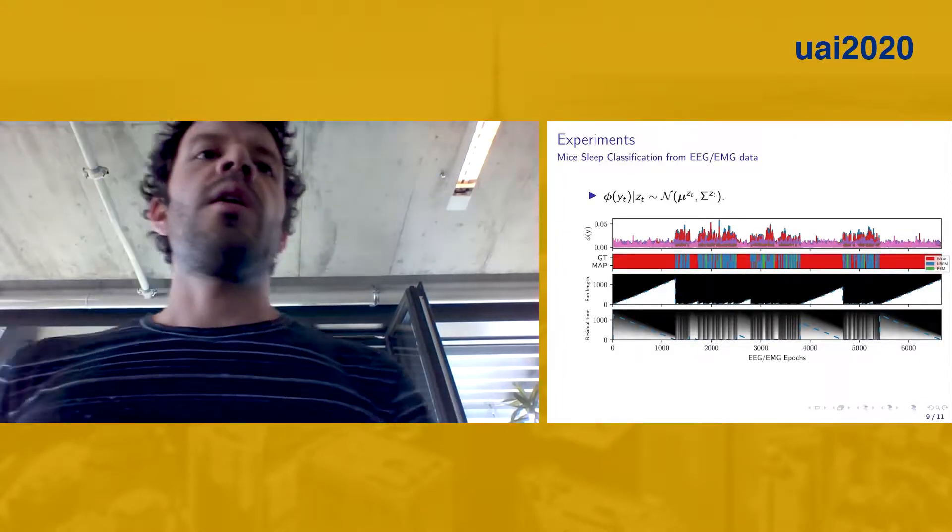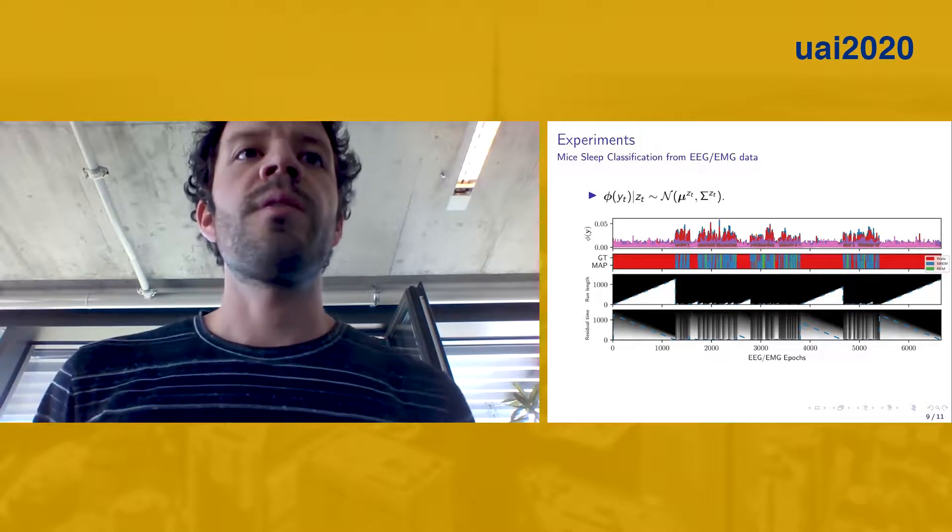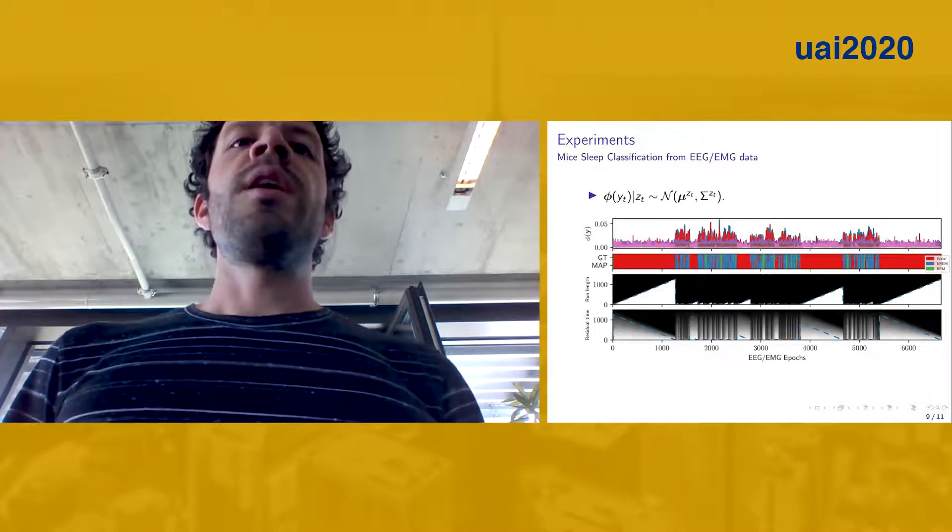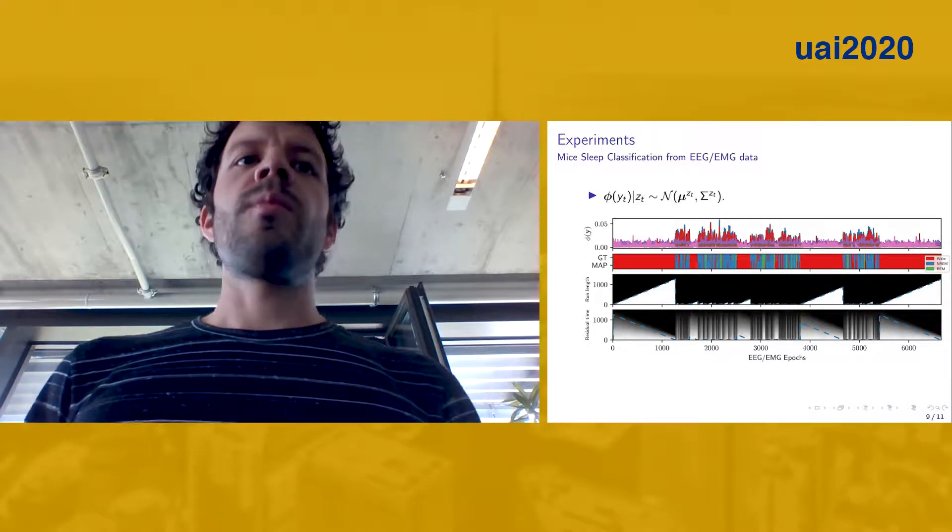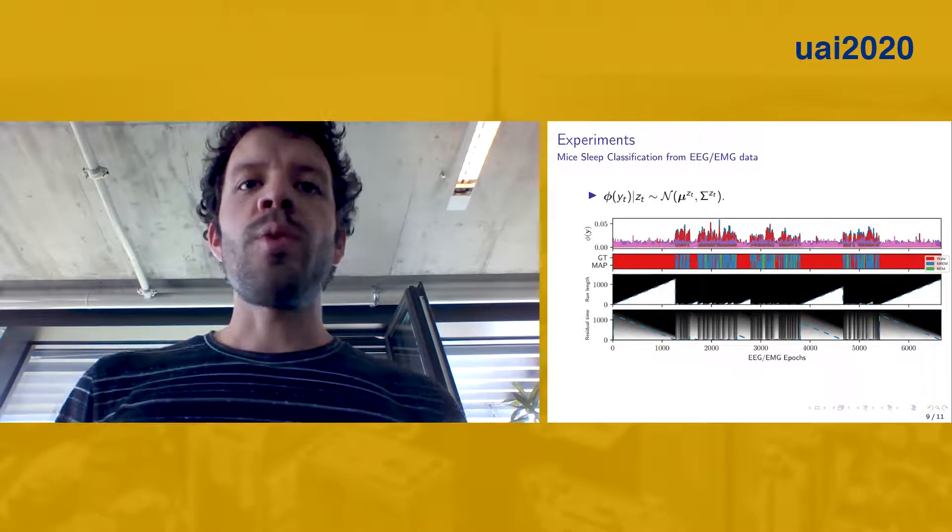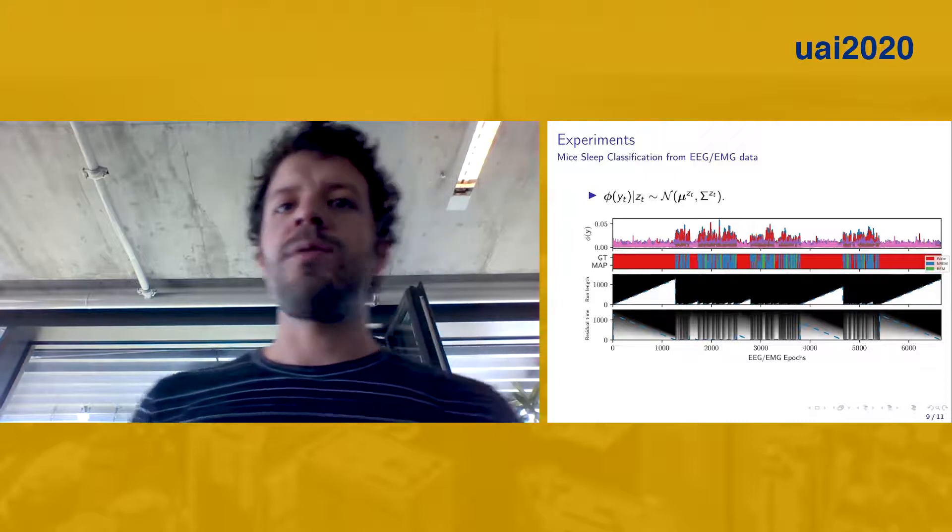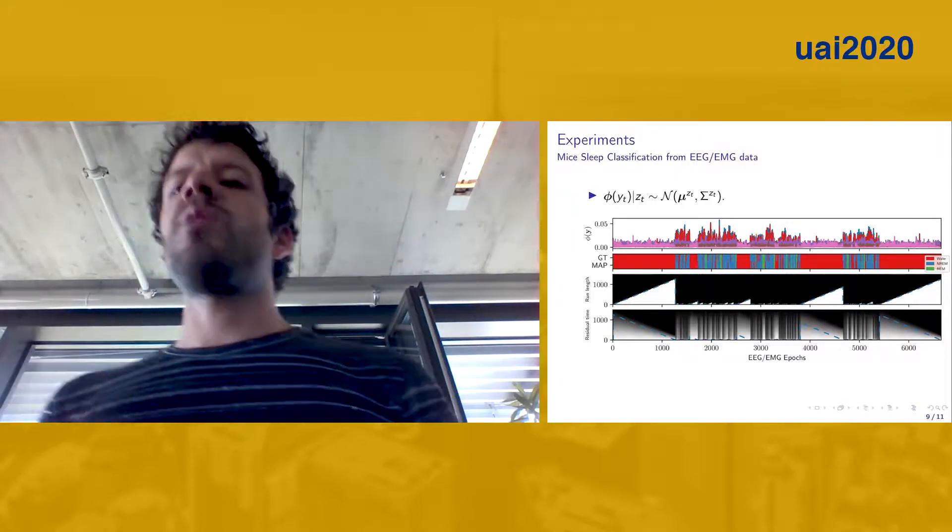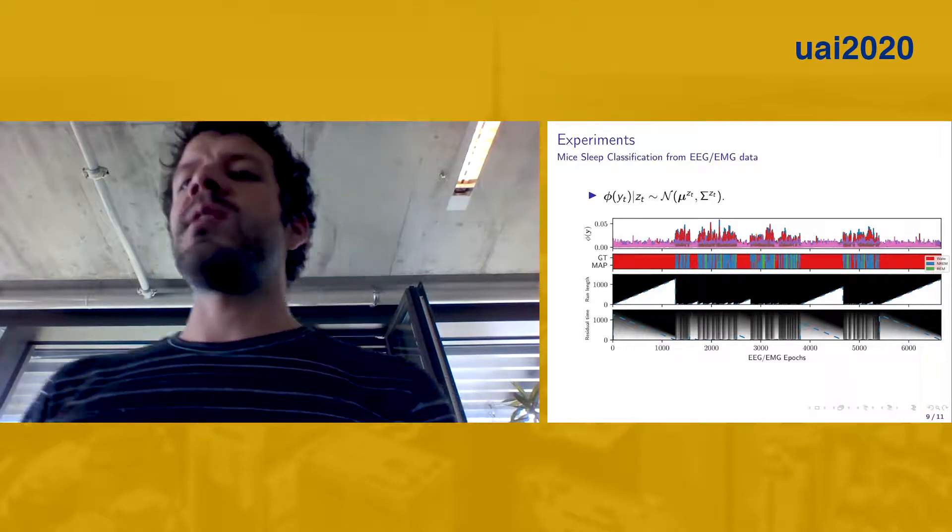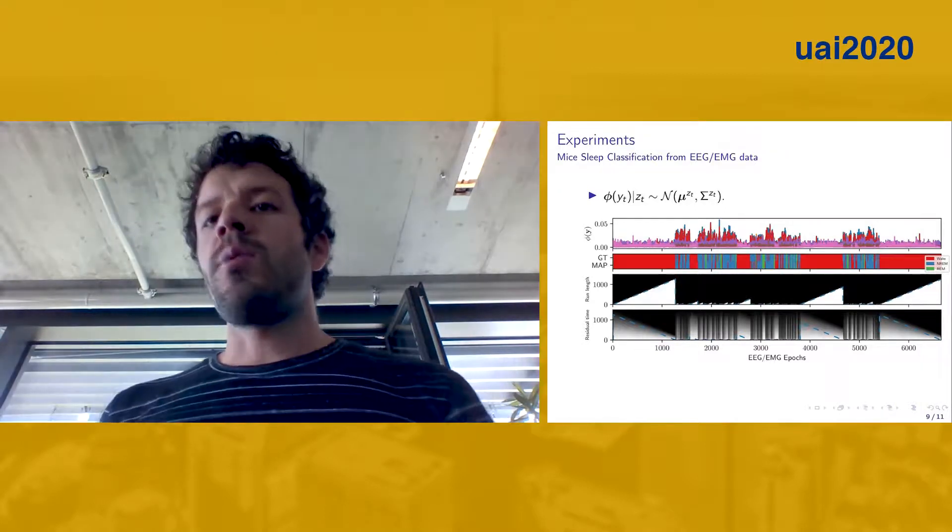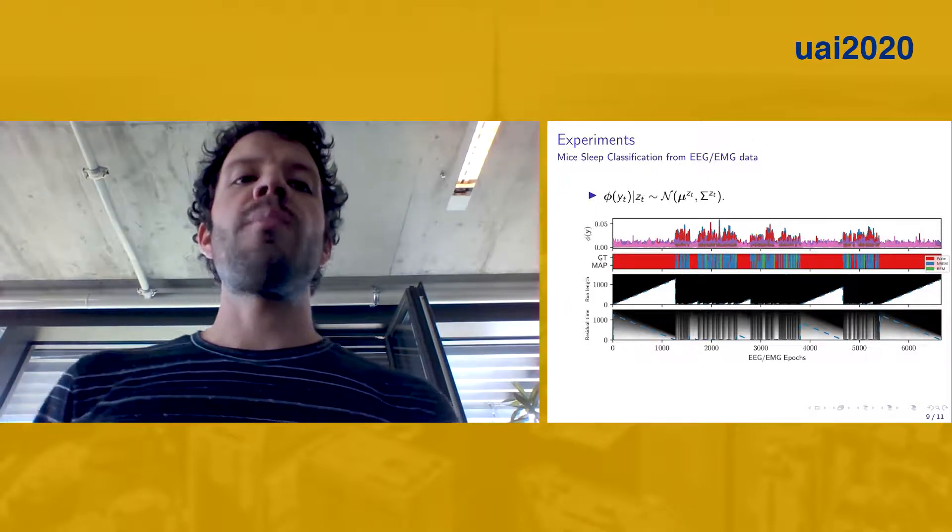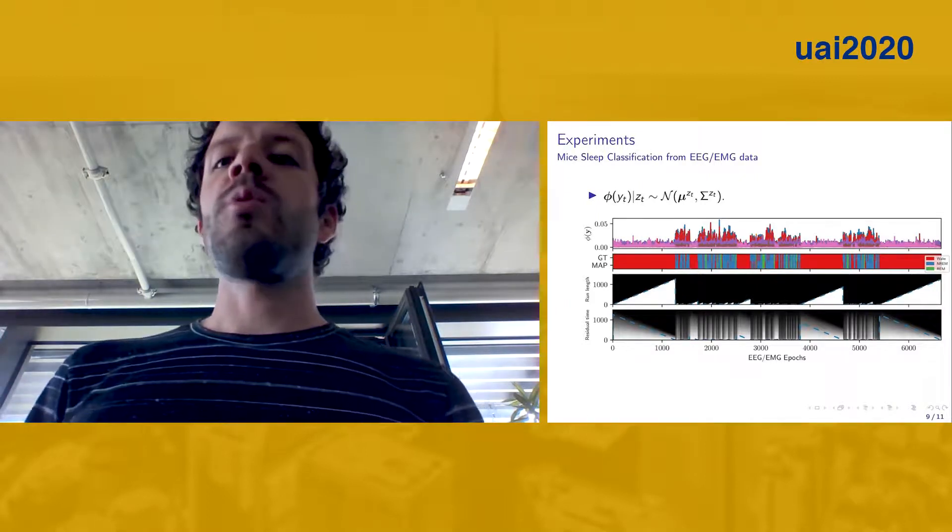We showcase the inferences drawn from our model in data coming from EEG recordings from mice. On the top row, you see the features that we are feeding into our model. In the second row, you can see the ground-truth hidden state values, which in this case denote different sleep states, red, blue, and green. Alongside, we also show the maximum-posteriority sequence of hidden states.